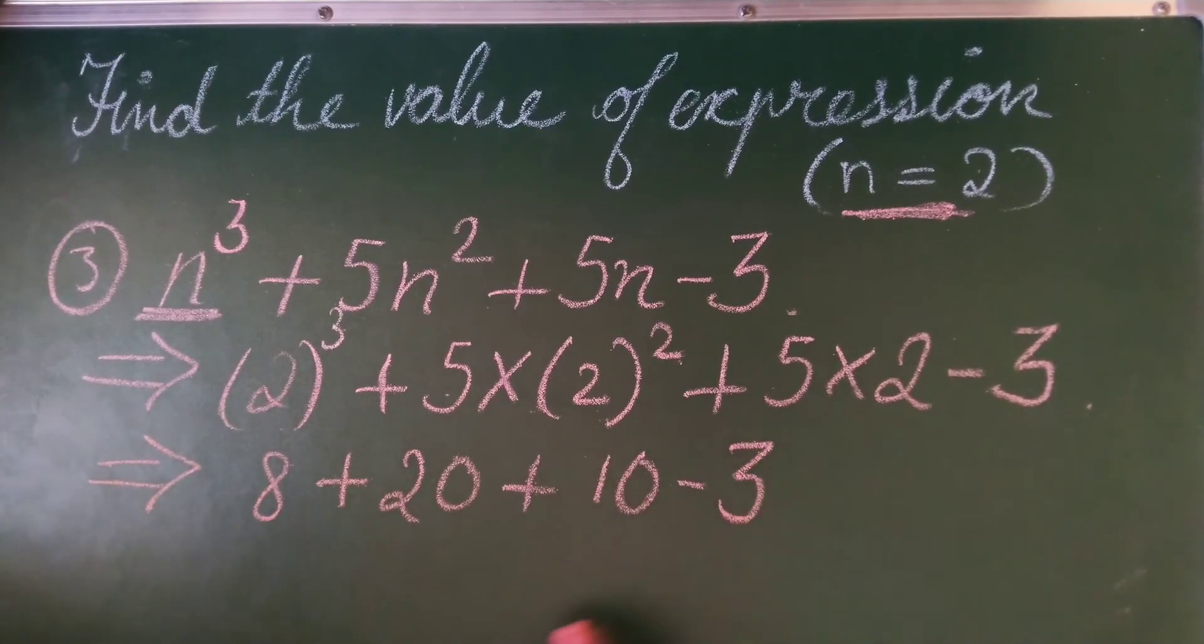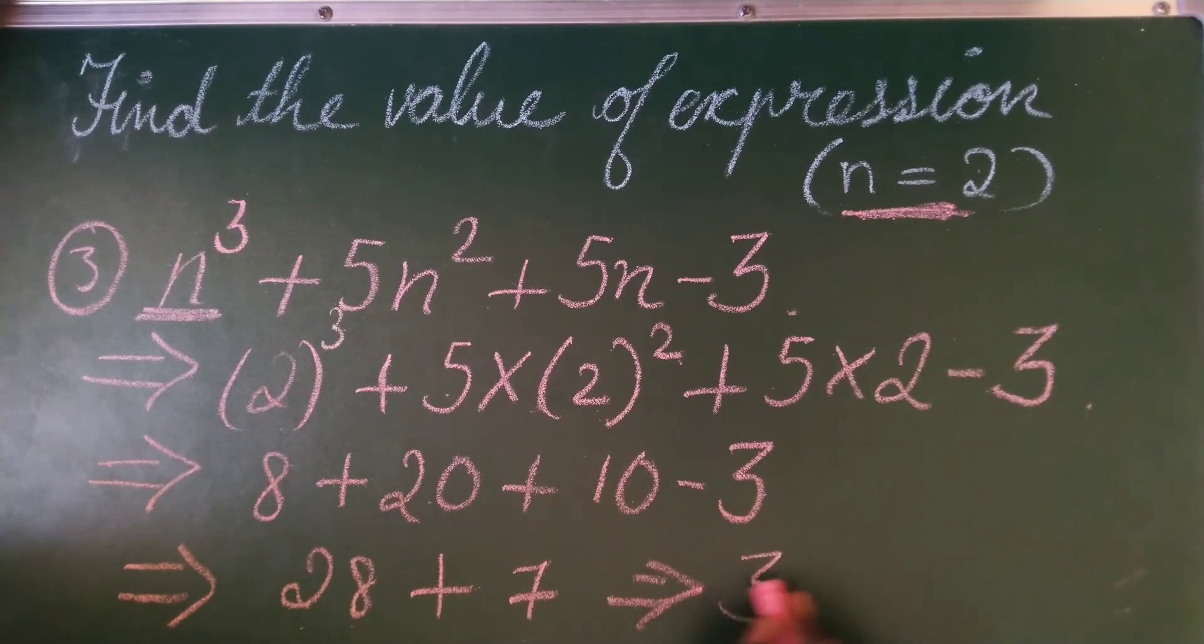So we just simplify this problem. 20 plus 8 is 28 plus 10 minus 3 is 7. So 28 plus 7 that gives me the answer as 35.